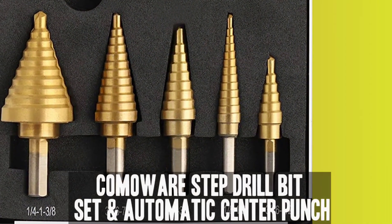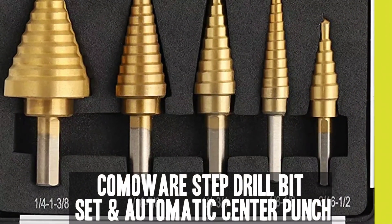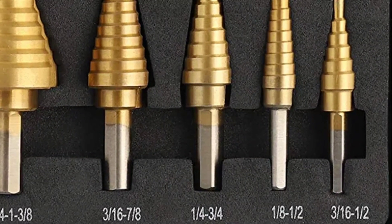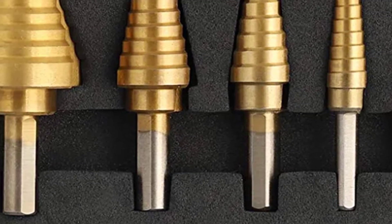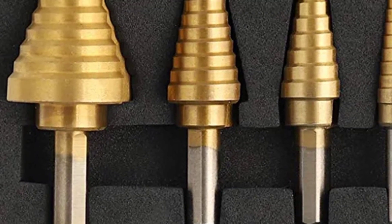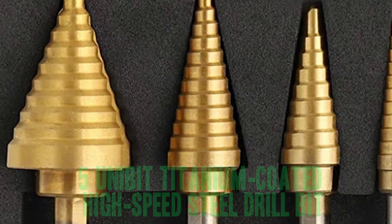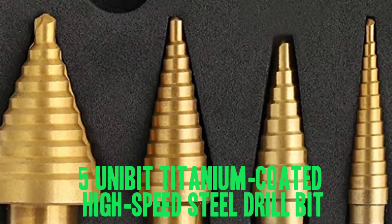Number 2. KOMO Wear Step Drill Bit Set and Automatic Center Punch. The KOMO Wear Step Drill Bit Set and Automatic Center Punch is a versatile and durable option for drilling tasks. The set includes 5 unibit titanium coated high-speed steel drill bits with an automatic center punch.